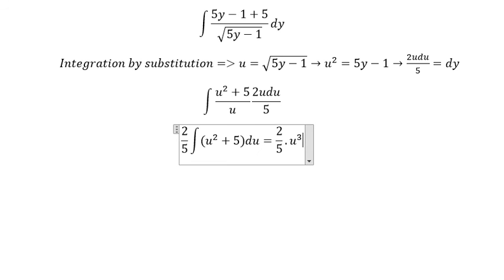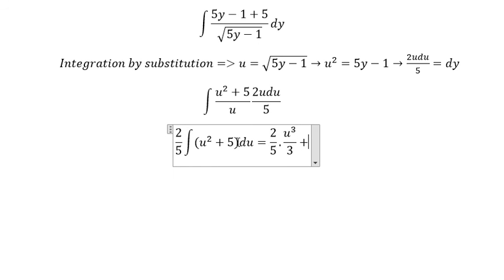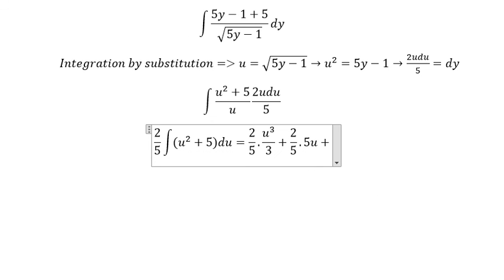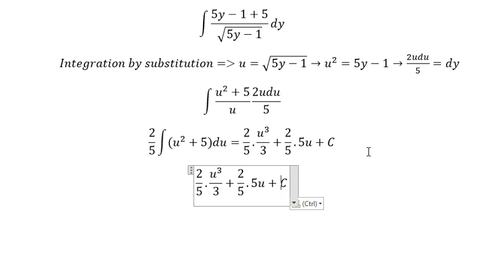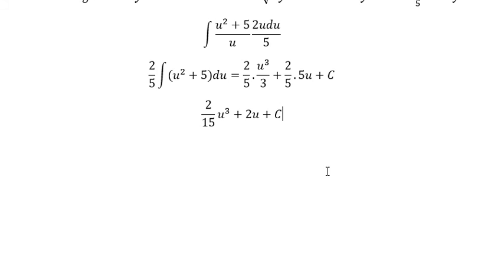The integral of u squared is u to the power of 3 over 3. The integral of 5 is 5u, and we have constant C. 5 multiply with 3 gives 15, and 2 over 5 multiply with 5 is 2.